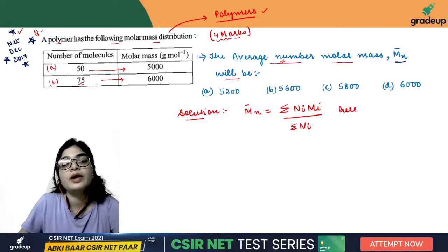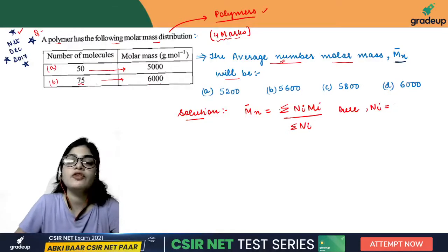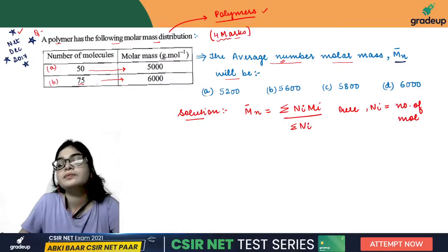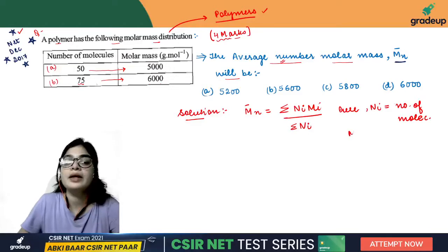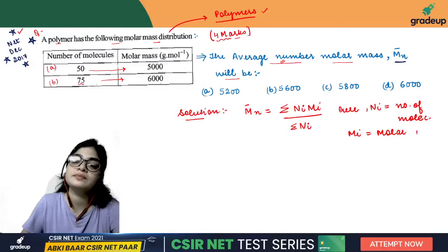Here, Ni is the number of molecules. Summation of Ni is the total number of molecules. Mi is the molar mass that you have given in the table.